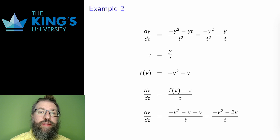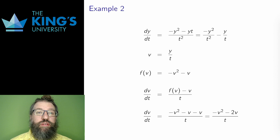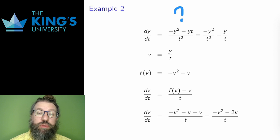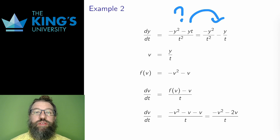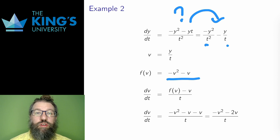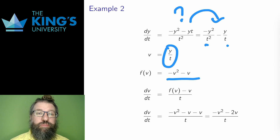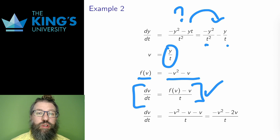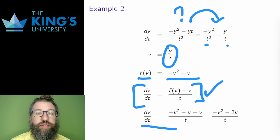Here is another example, which is good to show that these substitutions don't always appear obvious. This doesn't look like the right side should be a function of y/t. But if I split up the fraction and simplify, I see this is negative y²/t² minus y/t, which is negative v² minus v. So sometimes it requires a bit of work to recognize the substitution. Once I have f(v) as negative v² minus v, I apply the standard form: dv/dt equals f(v) minus v over t, then simplify the separable equation.